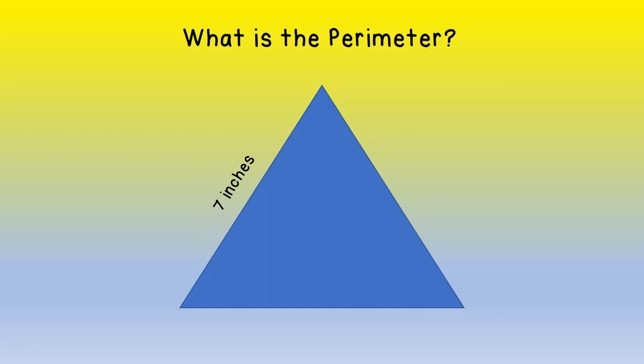This triangle, we said that each side is congruent. They all measure the same. Three sides, 7 inches each. 7 plus 7 plus 7 is 21 inches.